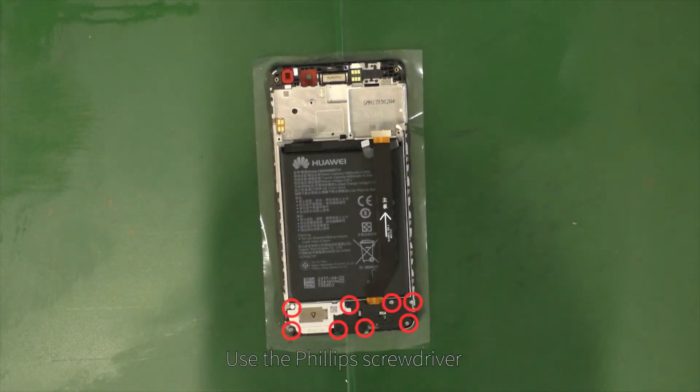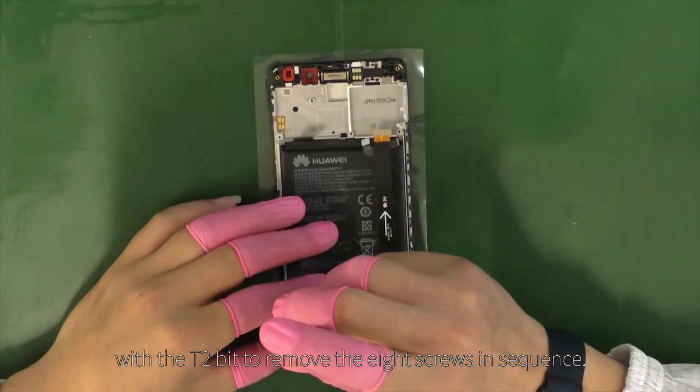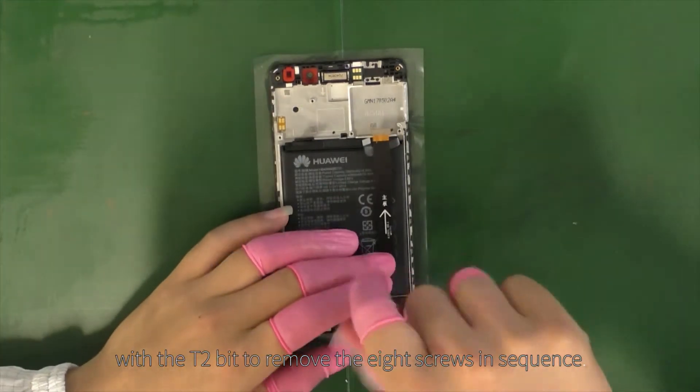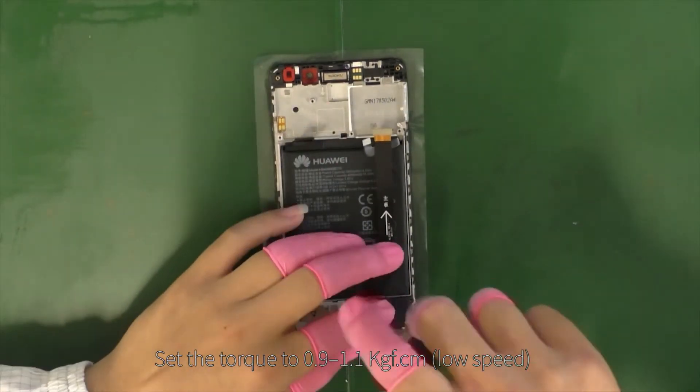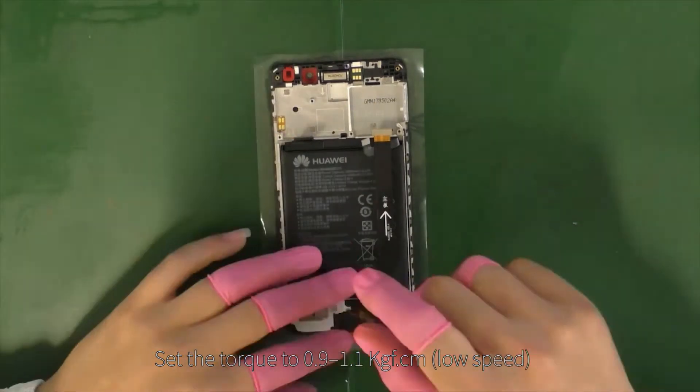Use the Phillips screwdriver with the T2 bit to remove the eight screws in sequence. Set the torque to 0.9 to 1.1 kilogram force per centimeter.